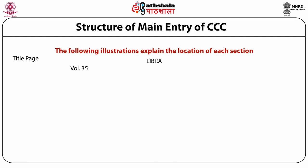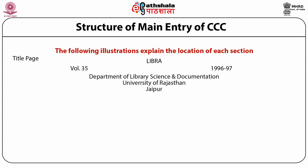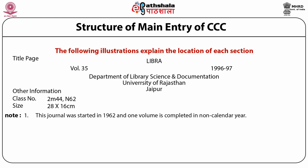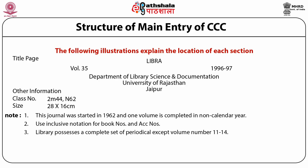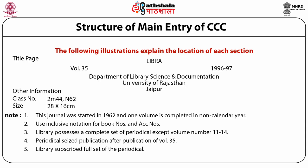Title page: LIBRA, Vol. 35, Year 1996–1997. It is an official journal of the Department of Library Science and Documentation, University of Rajasthan, Jaipur. Other information: class number is 2M44, 1962. Size of the periodical is 28×16 cm. Note: the journal was started in 1962 and one volume is completed in a non-calendar year. Use of inclusive notation for book numbers and accession numbers. Library possesses a complete set of the periodical except volumes 11–14. Periodical ceased publication after publication of volume 35. Library subscribed the full set of the periodical. Dr. S.P. Suud edited this journal from volume 10 to volume 27.